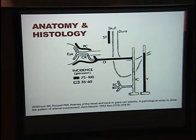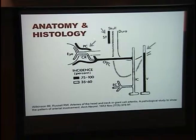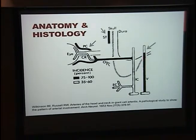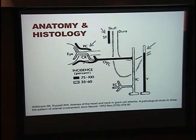The most commonly affected vessels include the superficial temporal, the vertebral, the ophthalmic artery, and the posterior ciliary artery. Notably, this high incidence of involvement stops abruptly after it hits the dura. The same happens with the central retinal artery — there's a medium amount of vulnerability, and once it hits the dural sheath it loses much of its vulnerability to the vasculitis.